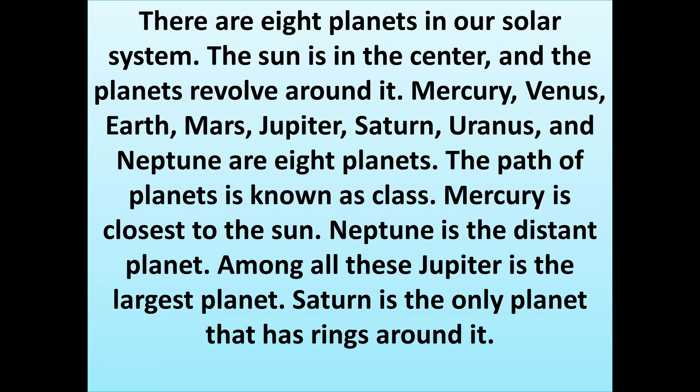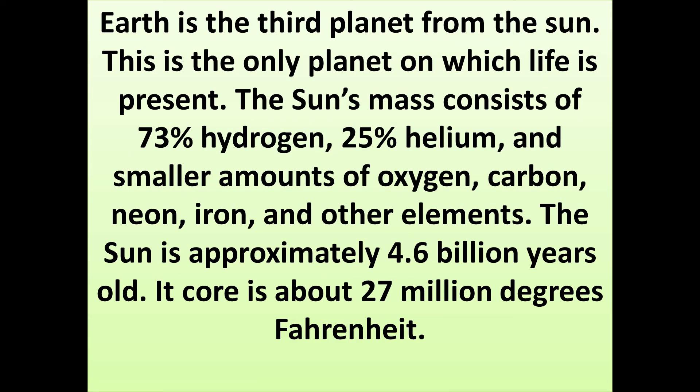The path of planets is known as class. Mercury is closer to the sun. Neptune is the distant planet. Among all, Jupiter is the largest planet. Saturn is the only planet that has rings around it. Earth is the third planet from the sun. This is the only planet on which life is present.